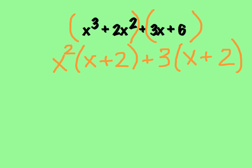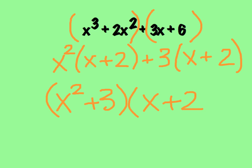A couple things are happening right here. First of all, you'll notice that these two binomials are exactly the same, as they should be. My greatest common factors are written out in front of the two binomials. From here, I'm going to use the reverse distributive property to write my answer. So my answer is going to look like x squared plus 3 in parentheses times x plus 2. As always, to check my final answer, I can use the FOIL method to multiply these two binomials out, and if I get my original polynomial, I know I did my work right.